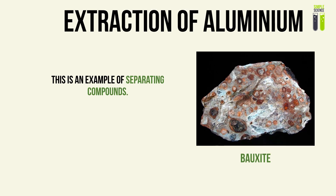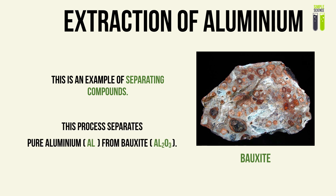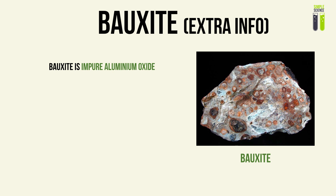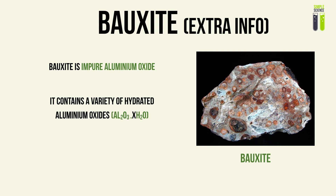We're going to be separating aluminium from its most natural ore — separating pure aluminium from a compound. Aluminium is a very reactive metal, so it exists in the natural world as a compound. This process aims to separate aluminium (Al) from bauxite, which can be seen as impure aluminium oxide. Bauxite contains a variety of hydrated aluminium oxides — it's almost like a mixture of aluminium oxide salts. For simplification, just look at bauxite as an ore of impure aluminium oxide.